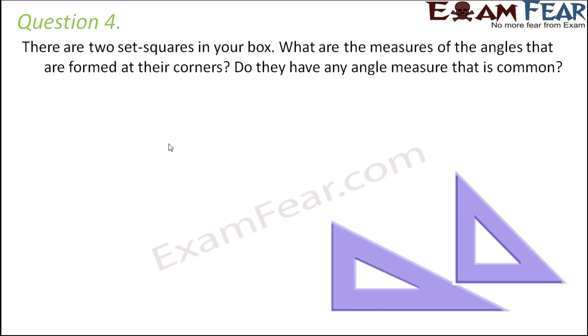Question number four. There are two set squares in your geometry box. What are the measures of the angles that are formed at their corners? Do they have any angle measure that is common? Now, if you look at the two set squares, you would see that both the set squares have 90 degrees in common. So for this set square, this is 90 degrees, this is 60 degrees, and this is 30 degrees. So this is one piece of set square, where the other two angles except the 90 degrees, they are unequal. One is 60, the other one is 30.